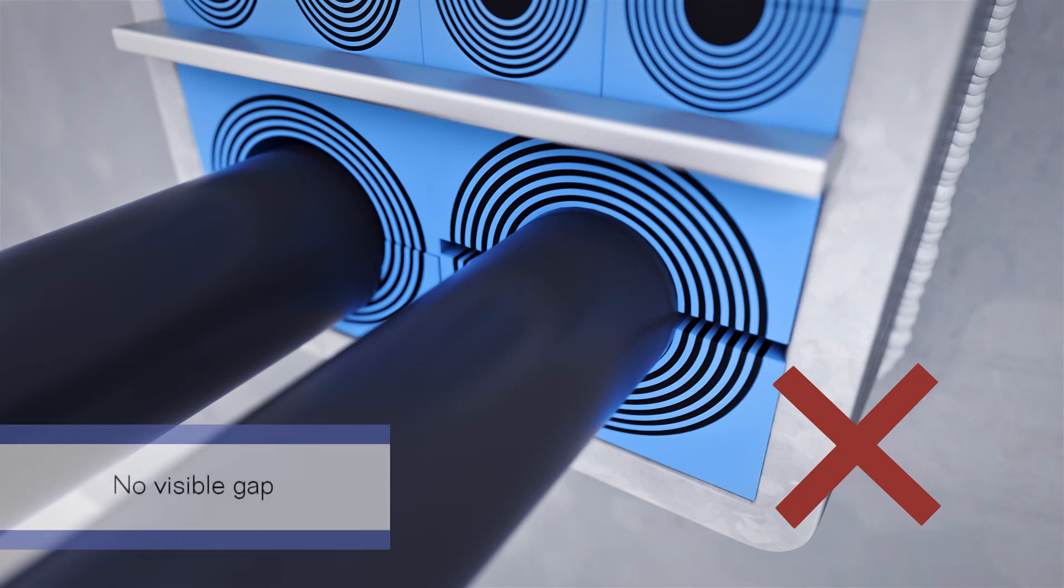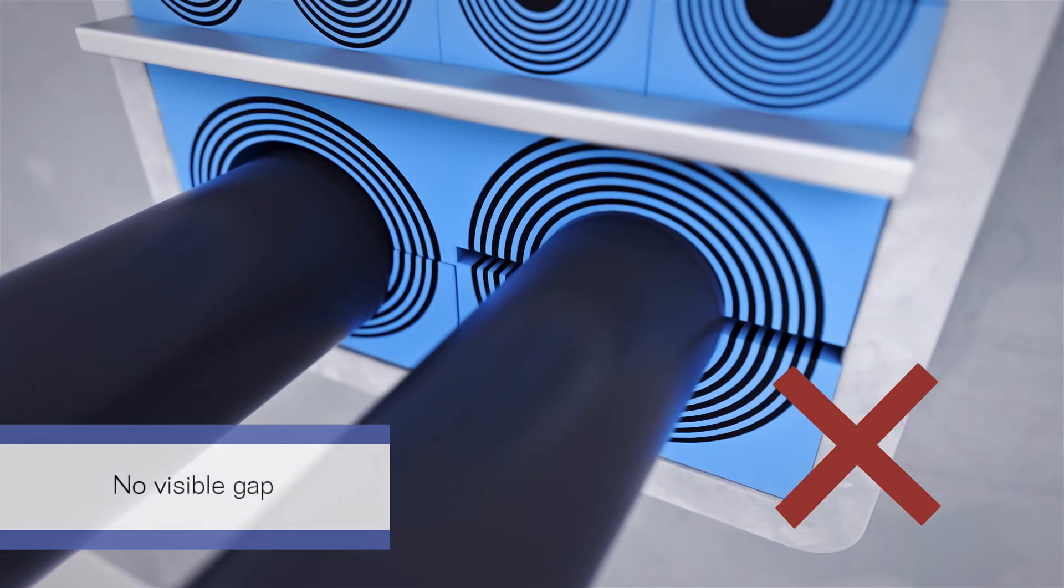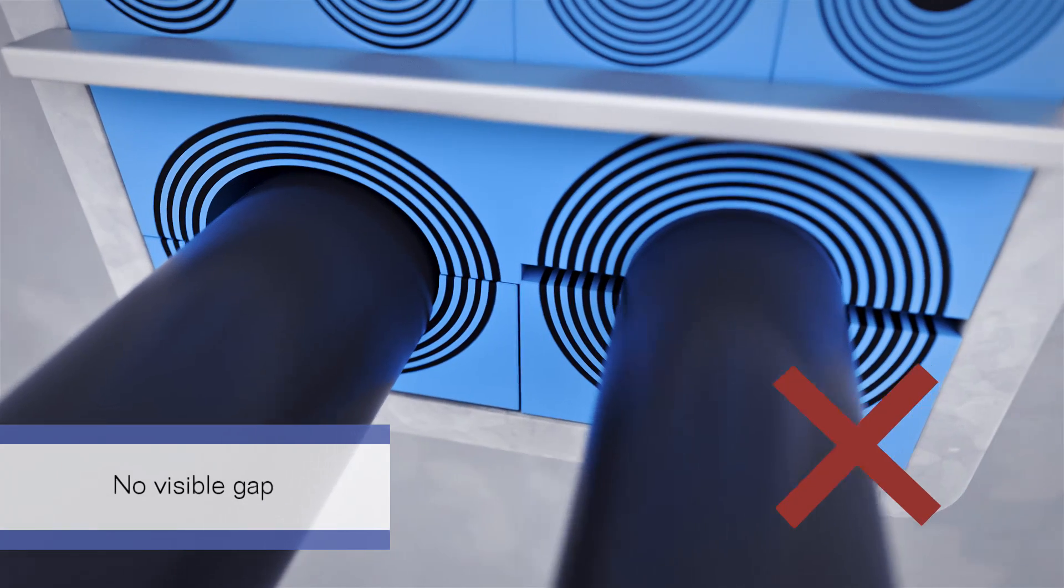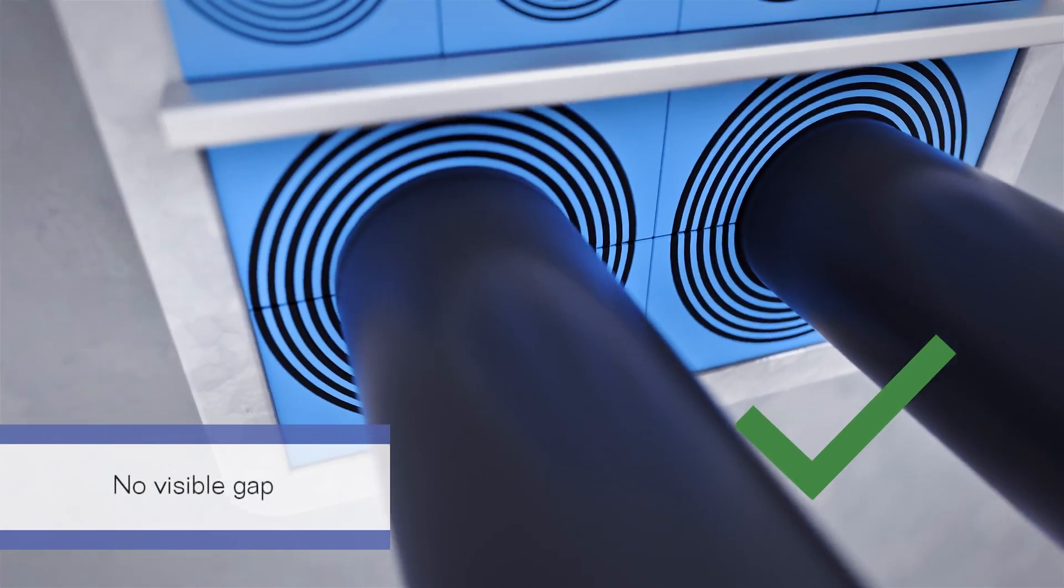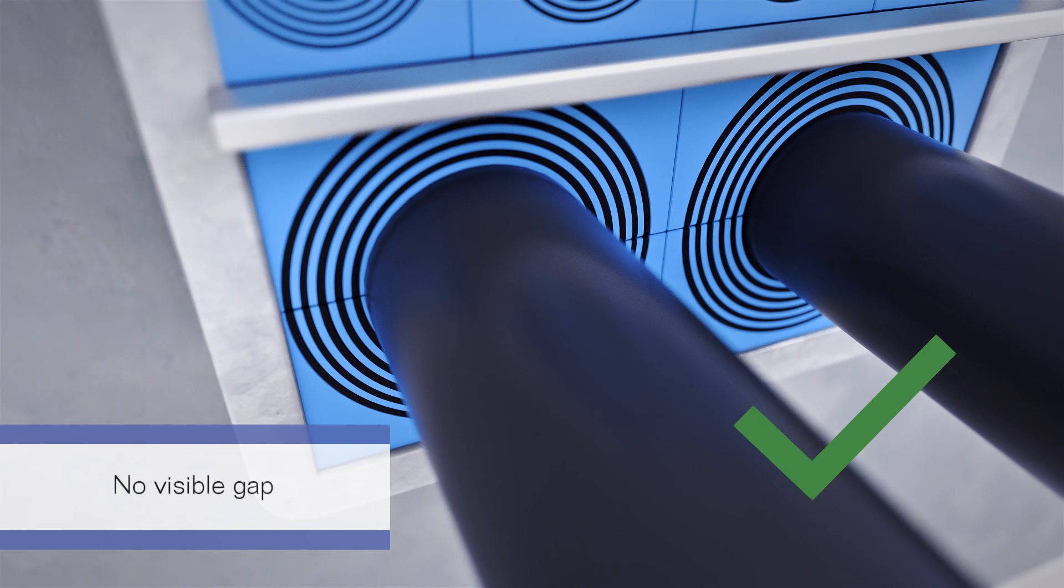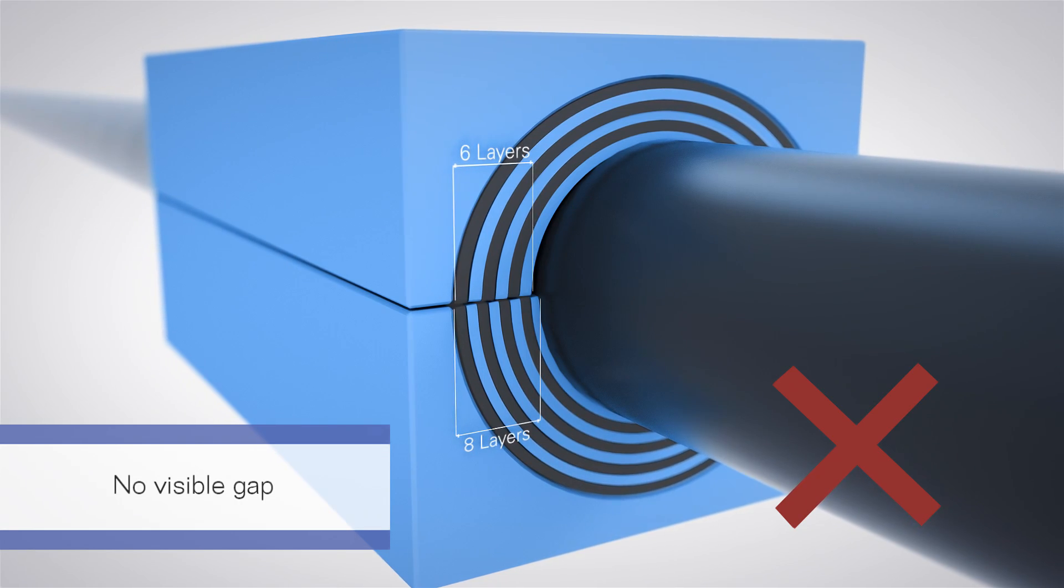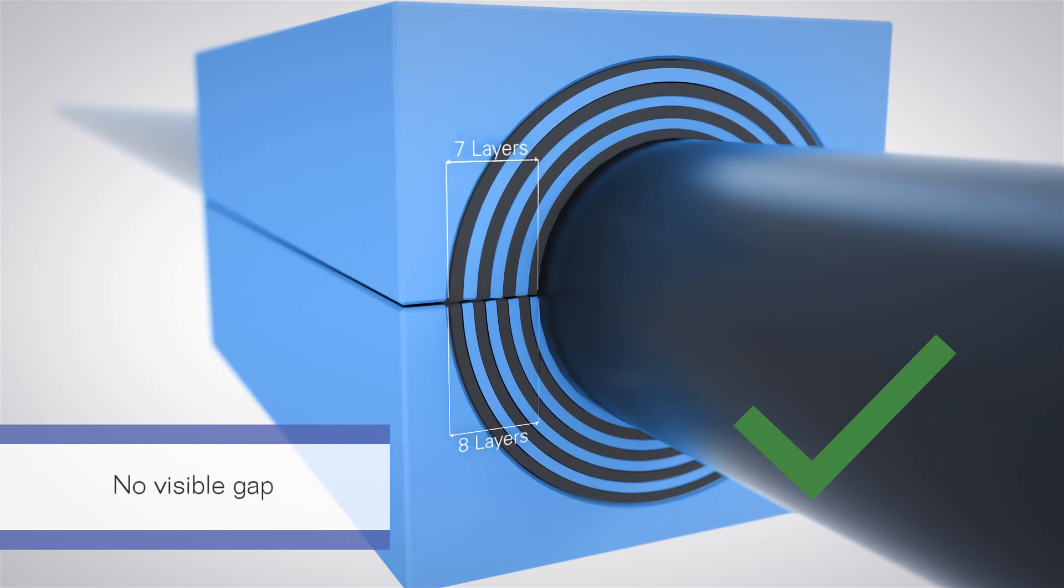Check that there is no visible gap after compression, neither between the cable or pipe and the module, nor between module halves or between the modules and the frame. The peeling of the module halves may not differ by more than one layer.